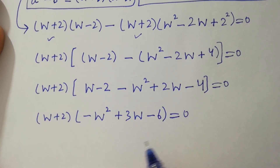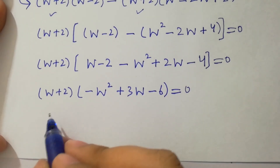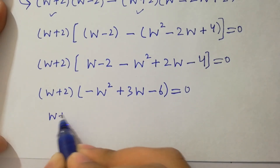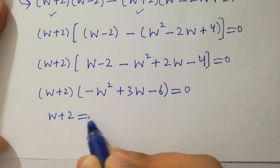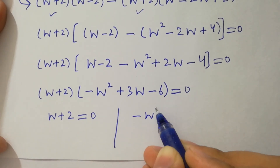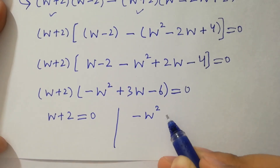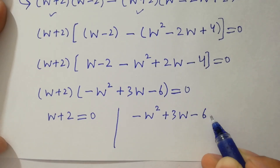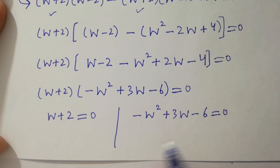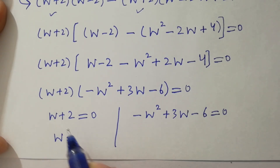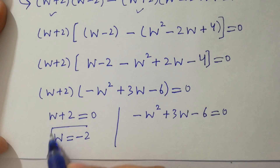So we have w plus 2 equal to zero, or minus w squared plus three w minus six equal to zero. From the first factor, w plus 2 equals zero, so w equals minus 2.